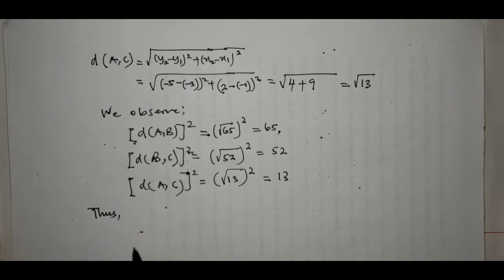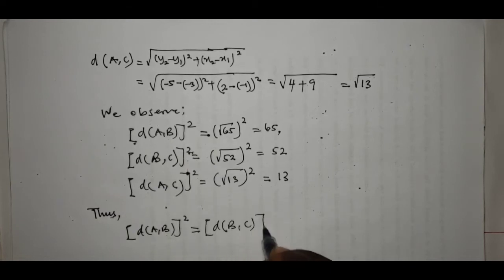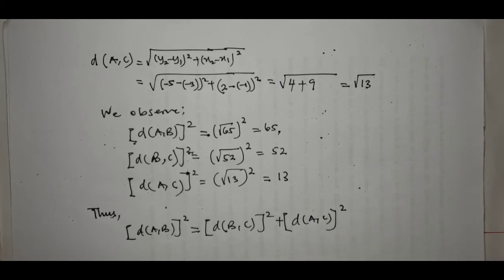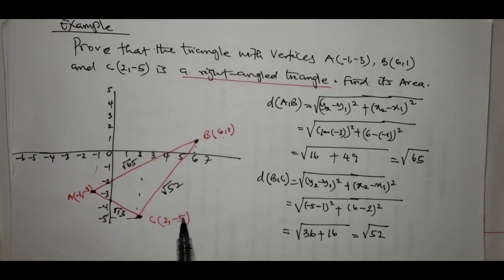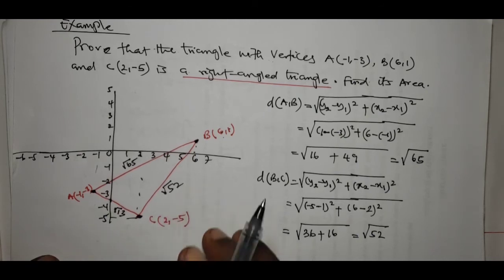We observe that the distance AB squared is equal to the square of distance BC plus the square of distance AC — that is, 65 = 52 + 13. If we recall a particular theorem, the theorem states that the square of the hypotenuse is equal to the sum of the squares of the other two sides, and that only happens in a right-angle triangle.